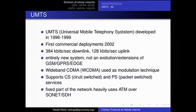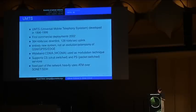Now UMTS — the Universal Mobile Telephony System. It was developed around 1996 to 1999, roughly the same time as GPRS. Since it's a completely different system, new phones were required, so it was expected to take longer to pick up. First commercial deployment was about three years after GPRS. UMTS in its core specification has 384 kilobits downstream to the phone and 128 kilobits on the uplink. It's an entirely new system based on wideband CDMA — code division multiple access.